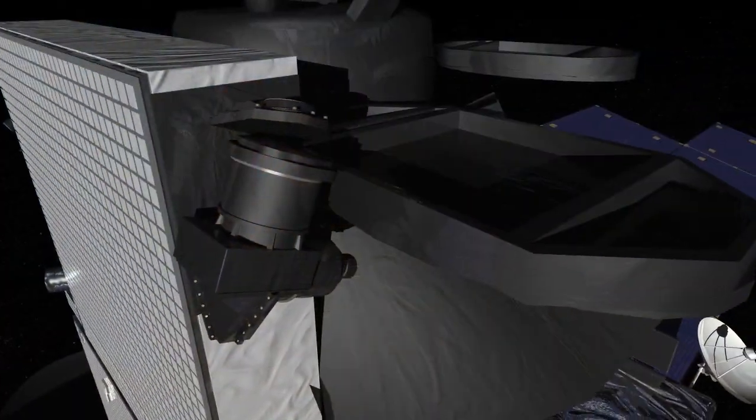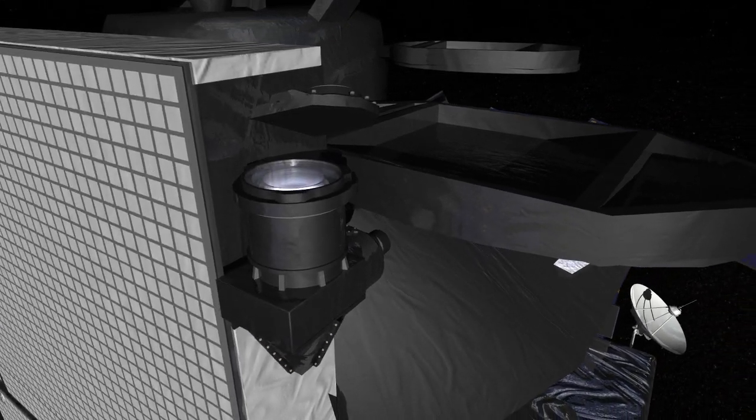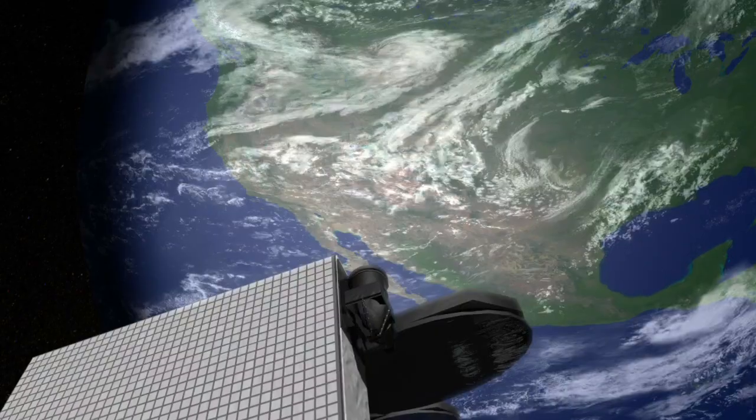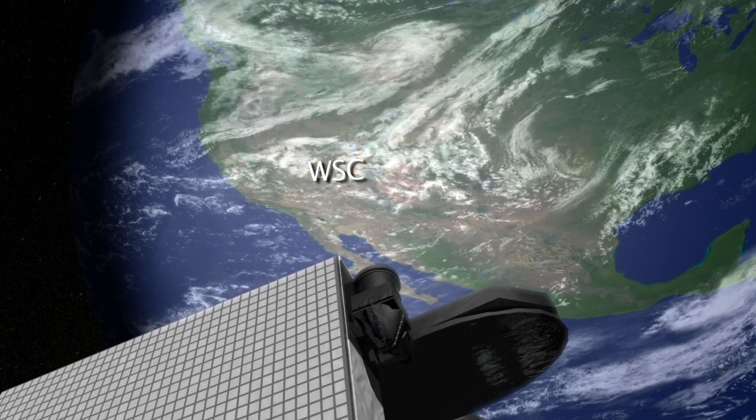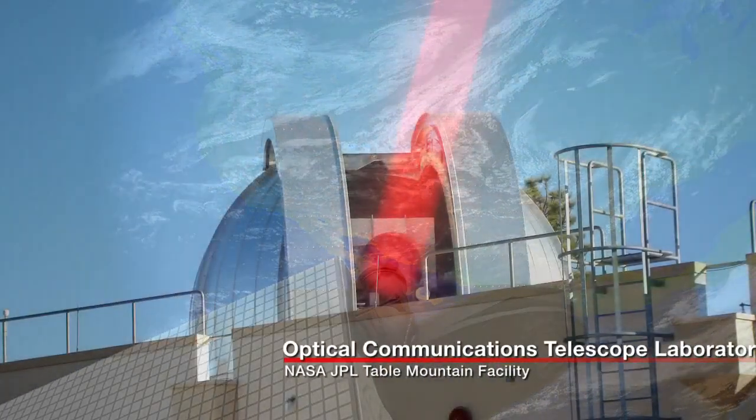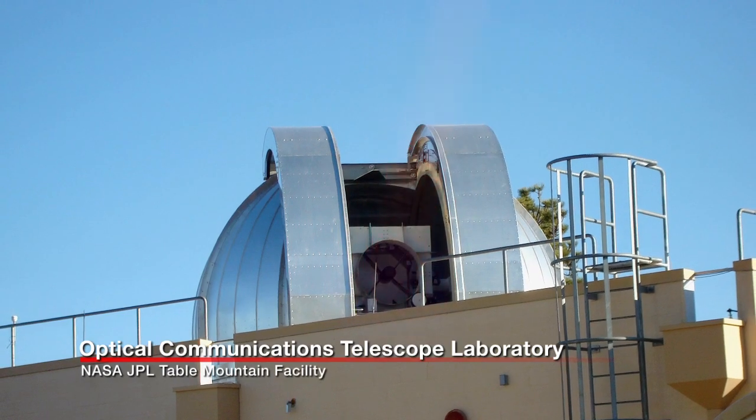Once on orbit, control of the optical module will be turned over to NASA Goddard for testing. Two-way data transmissions from ground stations at White Sands, New Mexico, and NASA's Jet Propulsion Laboratory in California will put the system through its paces.